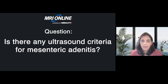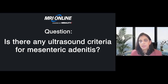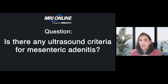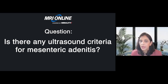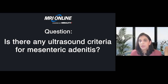Is there any ultrasound criteria for mesenteric adenitis? You see the lymph nodes, assess the size and character, then report them along with their location. These need to be followed up as they can become lead points for pathologies to happen.